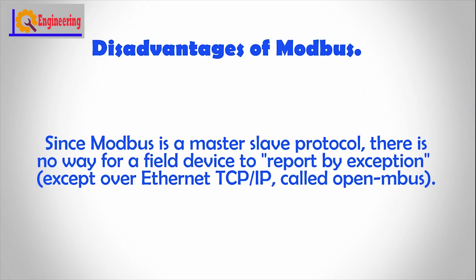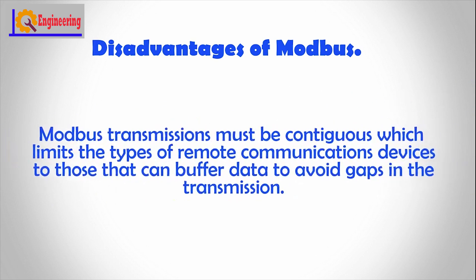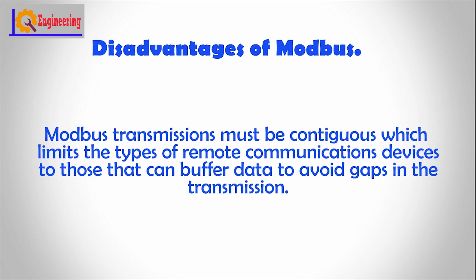Since Modbus is a master-slave protocol, there is no way for a field device to report by exception, except over Ethernet TCP/IP, called OpenMBUS. Additionally, Modbus transmissions must be contiguous, which limits the types of remote communications devices to those that can buffer data to avoid gaps in the transmission.